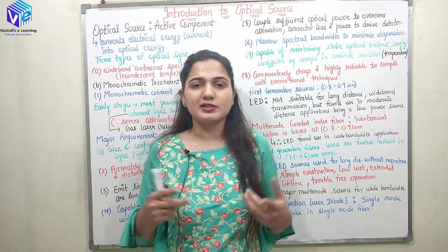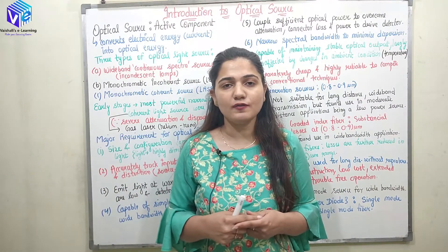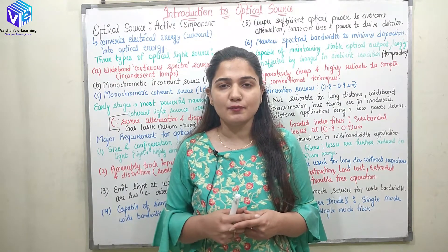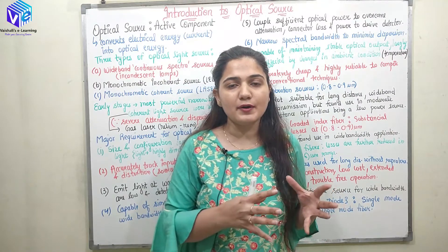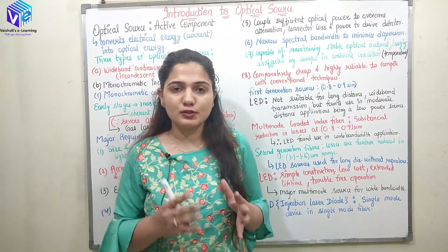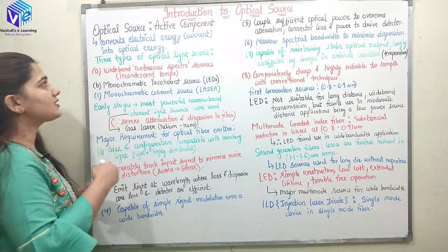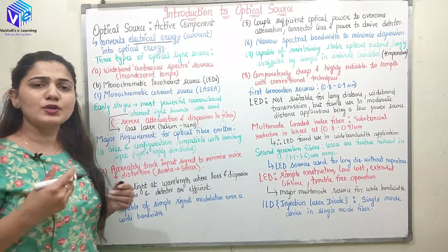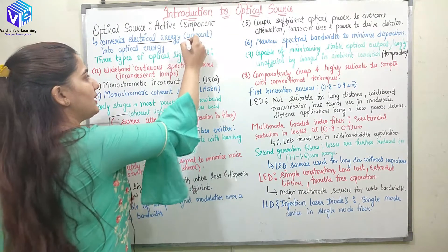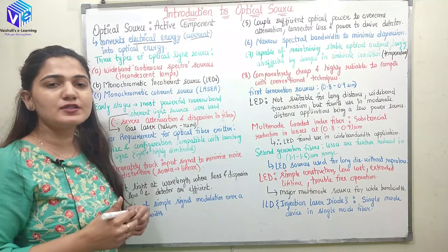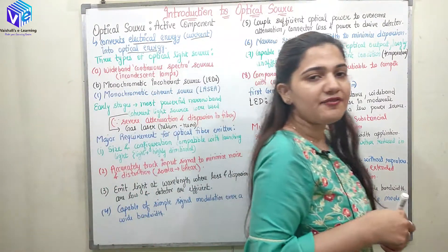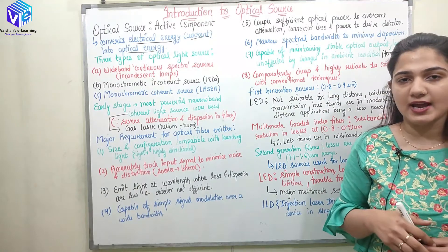What is an optical source? An optical source is an active component of the optical communication system. An active component is the one which is giving power or is related with power. The optical source is the active component because it is converting the electrical energy — which is in the form of current — into optical energy. Now I can classify the optical sources into three types mainly.